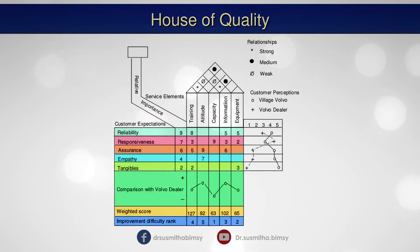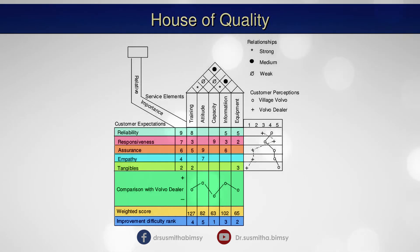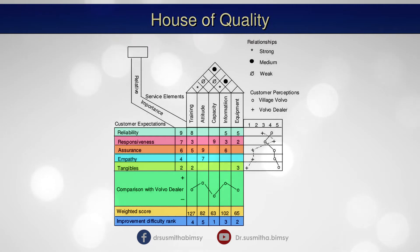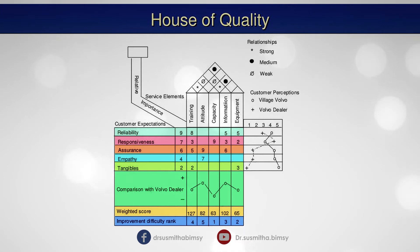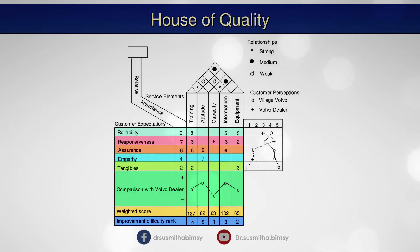The third element is controllable elements of service. The columns of the house represent the elements of service that the company has control over, such as training, capacity, equipment, attitude, and information. The fourth aspect is the relationship among elements, which are shown in the roof of the house. The relationship among elements can be strong, medium, or weak. For example, the relationship between training and attitude is strong, whereas the relationship between training and capacity is weak.